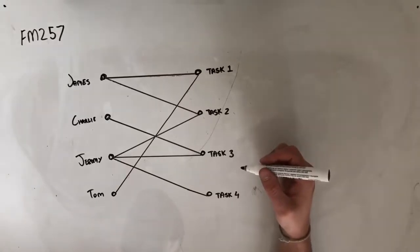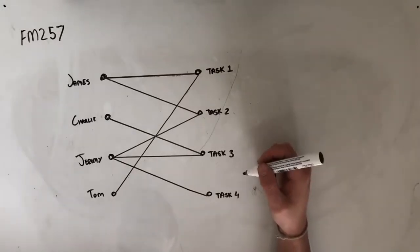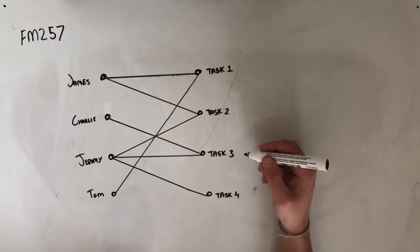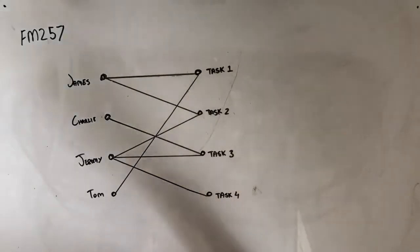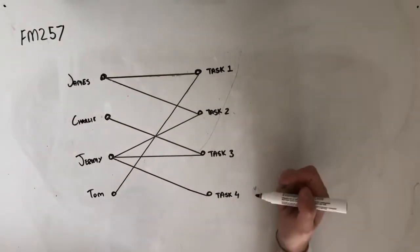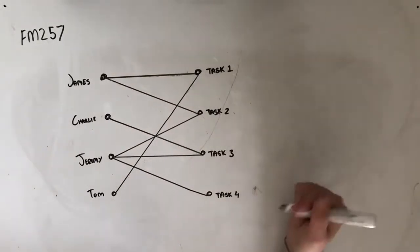Each person completes a different task. Task two must be completed by who? And then we're given five different options. So the best way to take on a question like this, I find, is usually finding the connections between people and tasks that only have one edge between them.